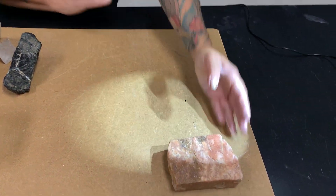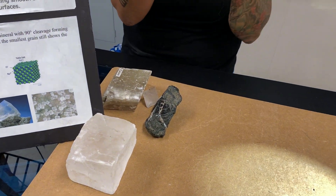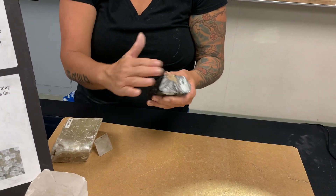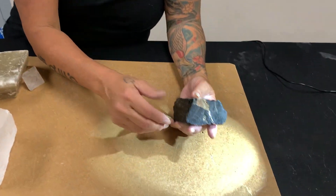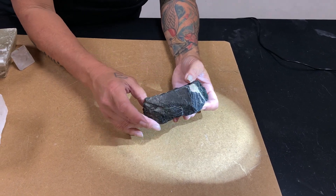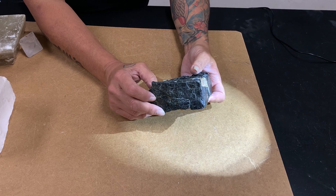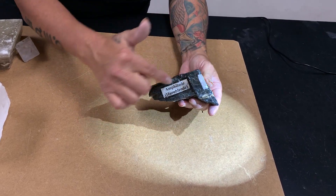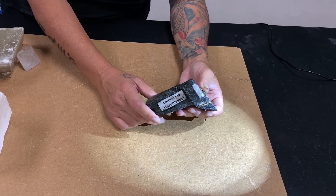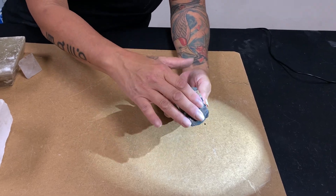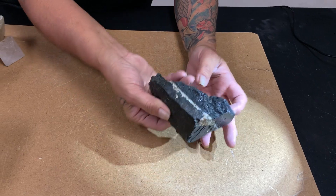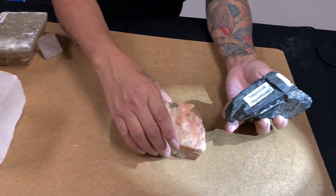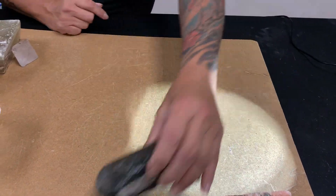Then we have two directions NOT at 90 degrees — any other angle, whether 120 degrees, 60 degrees, or whatever. You have two planes of reflected light, but they are not at 90 degrees. Here's the first plane with light bouncing off, and here is the next plane. If you turn it, you can see that the two reflected planes are actually in the shape of a house roof — that's greater than 90 degrees. The only difference between this and two directions at 90 is the angle.